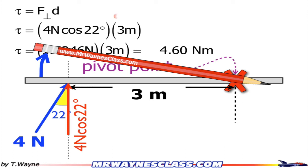And I know that whenever something moves in a clockwise direction, it's going to be a negative torque. So the correct answer is negative 4.60 newton meters.